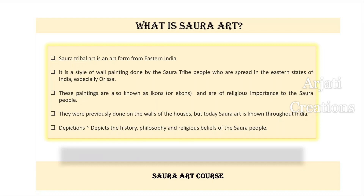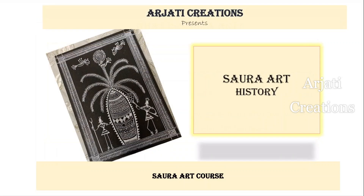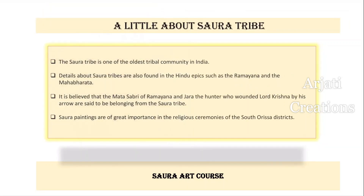Now let us learn a little more about the Sora tribe. The Sora tribe is one of the oldest tribal communities in India. Details of these tribes are mentioned both in the Ramayana and the Mahabharata. It is believed that Mata Shabari of the Ramayana and Zara the hunter, who wounded Lord Krishna with his arrow, both belonged to the Sora tribe. That is why Hindu epics hold great importance in Sora culture, especially for religious ceremonies in the district of Orissa.